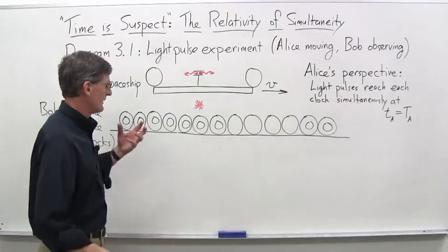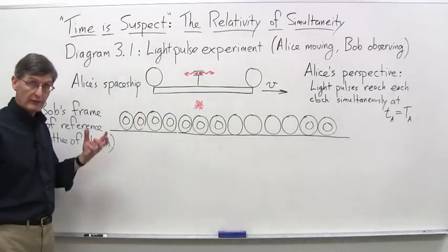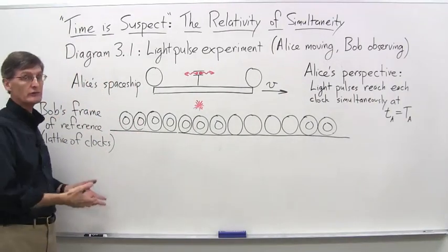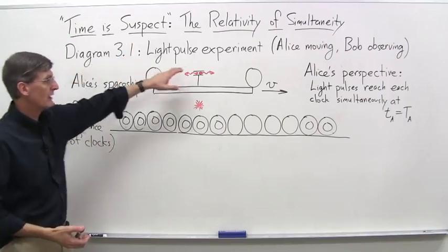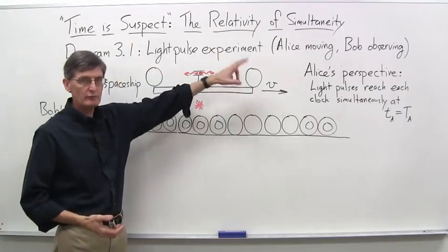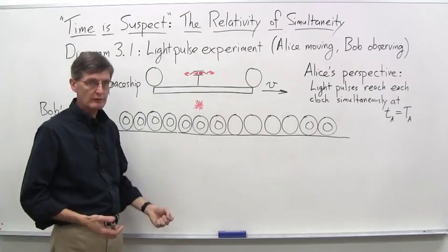Now let's look at the same experiment we just did with paintballs, except now we're going to use light pulses. So this is diagram 3.1, the light pulse experiment. Again, Alice is moving in her spaceship. Bob is going to be observing.